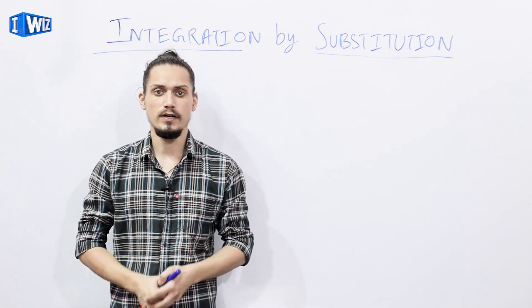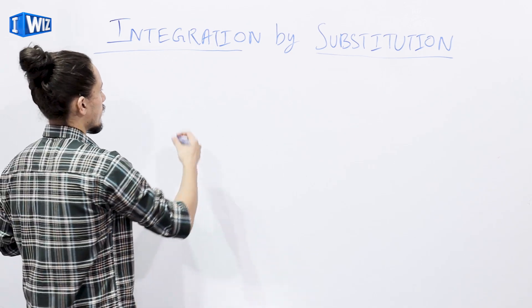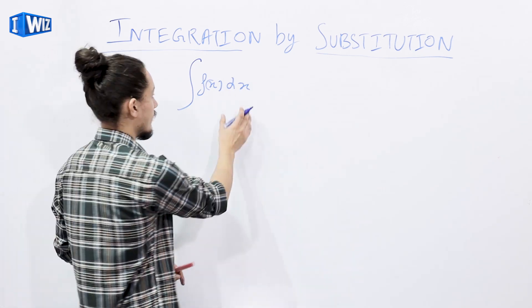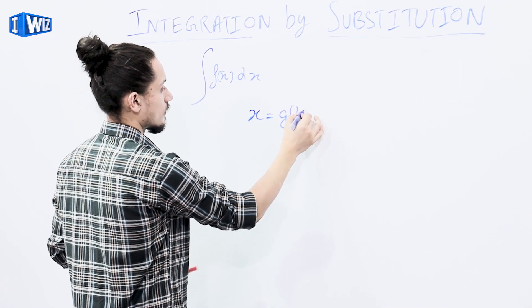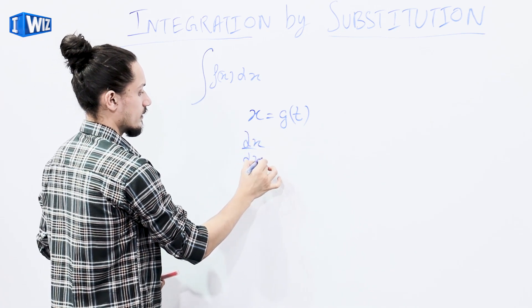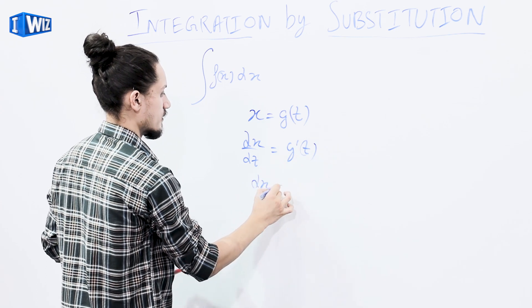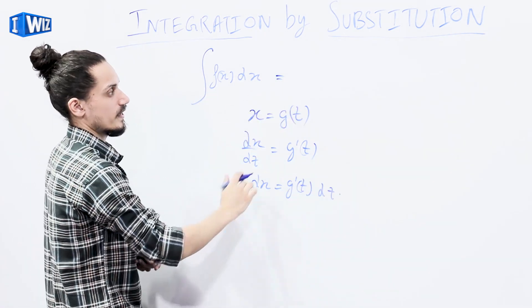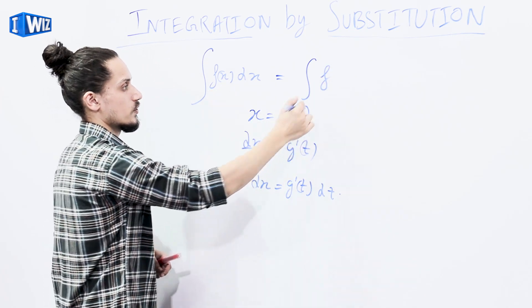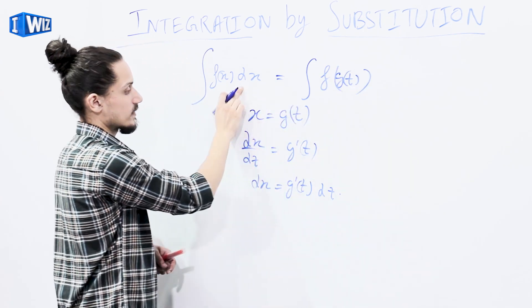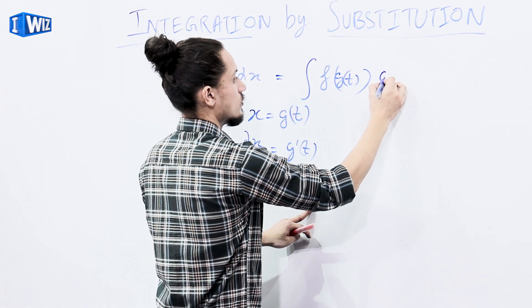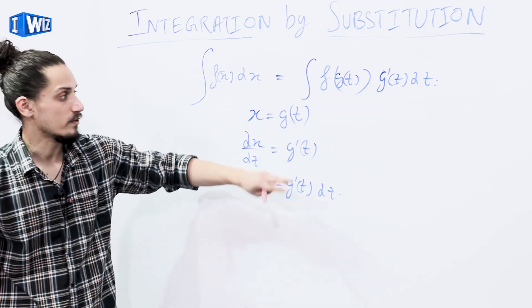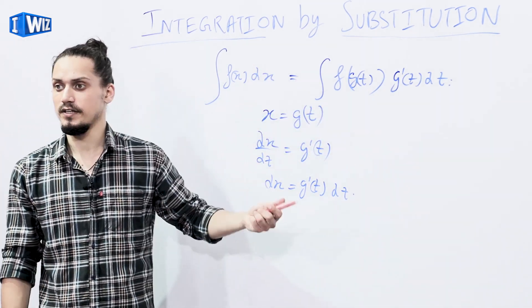Now there are different methods of integration, and the first is integration by substitution. In this method, if we need to find the integral of f(x) dx and we can transform it by writing x = g(t), then differentiating both sides gives dx/dt = g'(t), so dx = g'(t) dt. If we can transform a function by substituting some value into another form with different parameters, we call such a method integration by substitution.